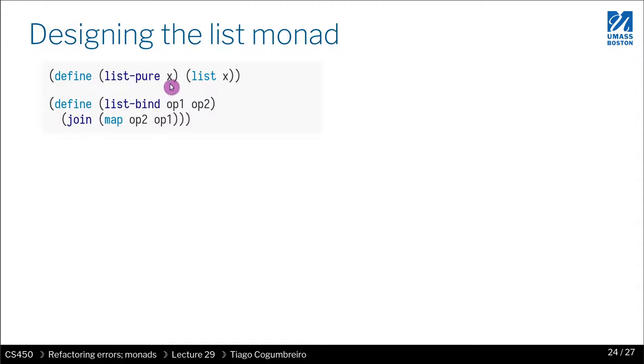So how do you return lists pure? You just convert whatever you pass it as a list.